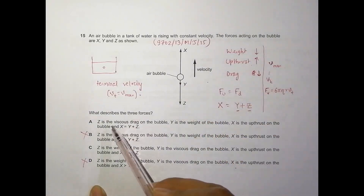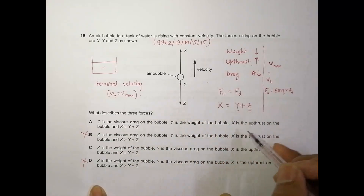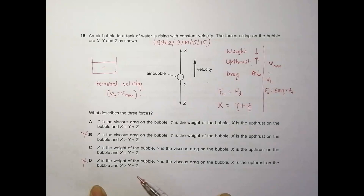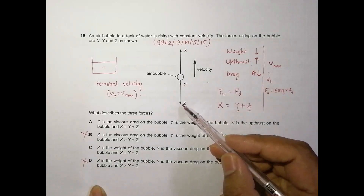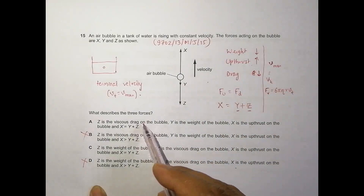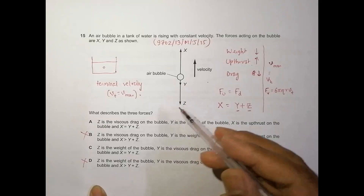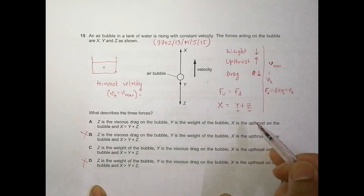So among the arrows, Z should be the drag force and Y should be the weight, because the drag force is at its highest value at terminal velocity and should be greater than the weight. Therefore, Z is the viscous drag, Y is the weight, and X is the upthrust. Choice A is correct, and choice C is incorrect because it assigns the larger arrow to weight and the smaller to viscous drag.